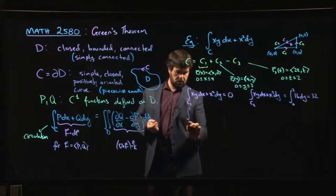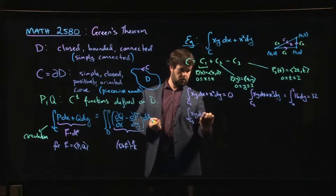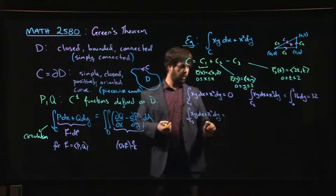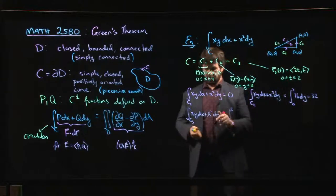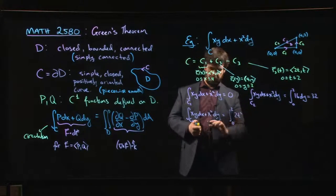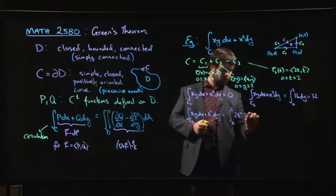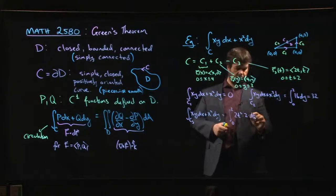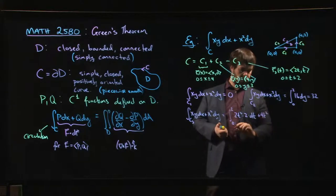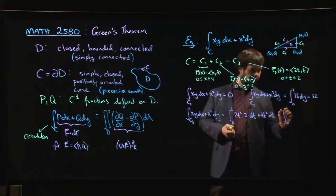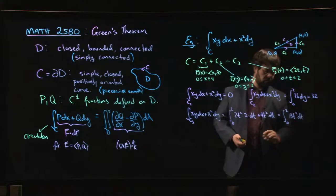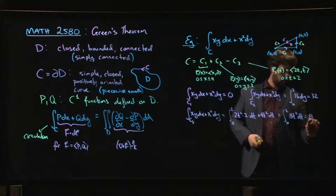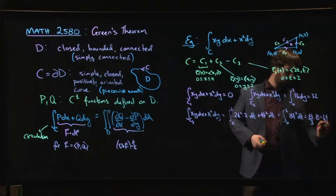Finally, we do the integral along c3. So now we're going to go, t goes from 0 to 2. x is equal to 2t, y is equal to t. So we have 2t times t, so 2t squared. dx will be 2 times dt. And then x squared is going to be 2 squared is 4 times t squared. So 4t squared times dt. dy is just dt in this case. So we have 4t squared, 4t squared. We have 8t squared. Okay, so that's going to be 8 over 3 times t cubed from 0 to 2. So 8 over 3 times 2 cubed. So 8 over 3 times 8. So 64 over 3.